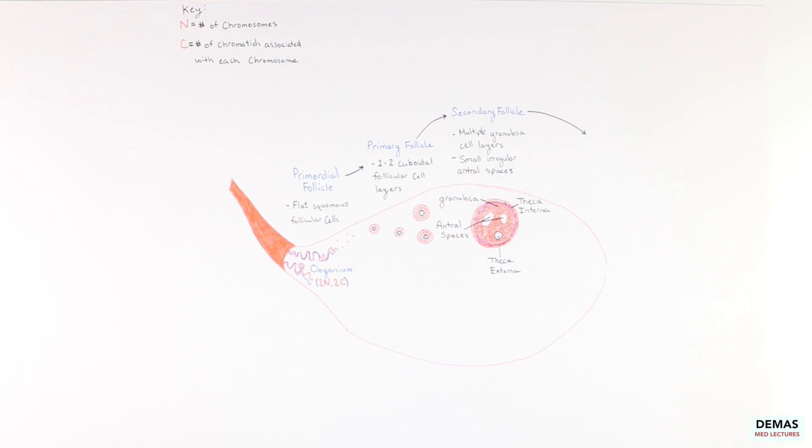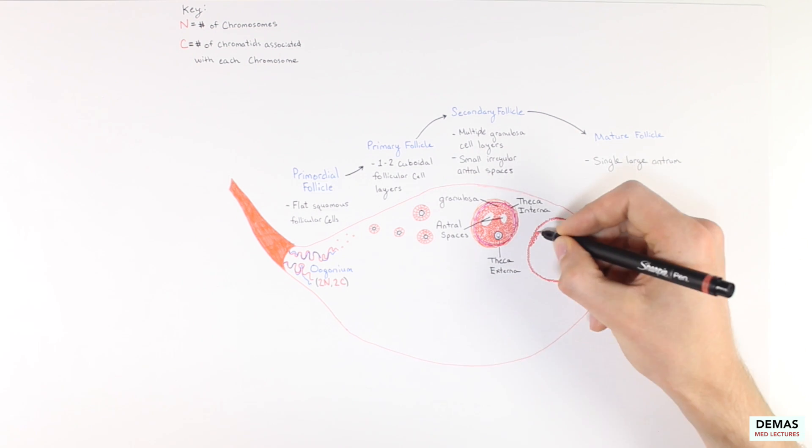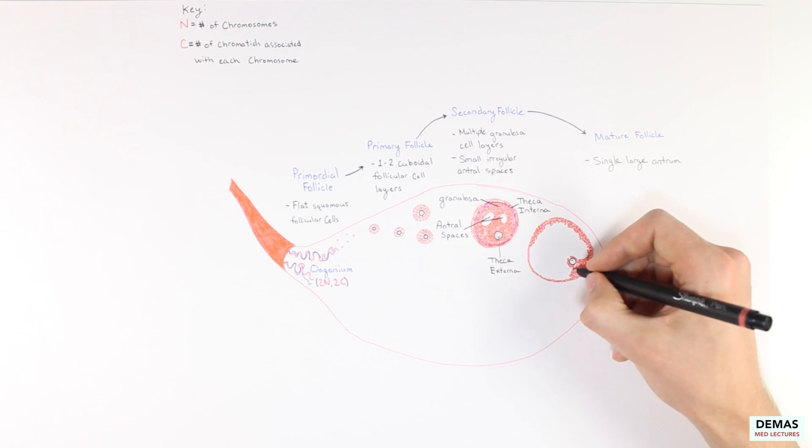The secondary follicle continues to grow and once the antral spaces coalesce to form a single fluid-filled pouch, the follicle has reached its mature form, which is adequately named a mature follicle.